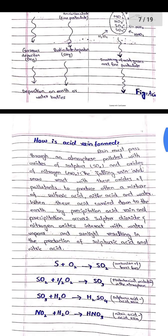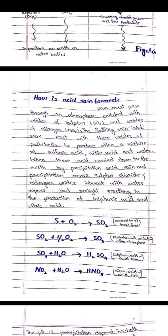How is acid rain formed? Rain must pass through an atmosphere polluted with oxides of sulfur and oxides of nitrogen. The falling rain and snow react with these pollutant oxides to produce a mixture of sulfuric acid and nitric acid and water. When these acids are carried down to the Earth by precipitation, acid rain and acid precipitation occur.